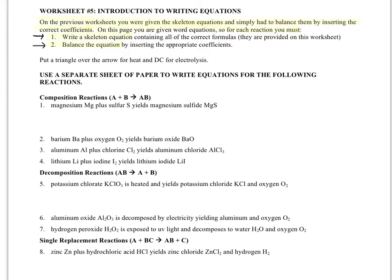So we'll look first at our example composition reaction. It says magnesium Mg plus sulfur S yields magnesium sulfide. So remember that yields is telling you where the arrow is going to be. So anything before the word yields is going to be a reactant, and anything after the word yields is going to be a product.